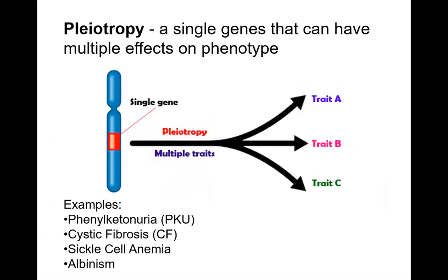What about the concept known as pleiotropy? This refers to single genes that can have multiple effects on phenotype. Depending on what you inherit, that one gene can lead to expression of many differences in body traits throughout the body. Examples include phenylketonuria, cystic fibrosis, sickle cell anemia, and albinism — all of which will be practiced in our practice session.